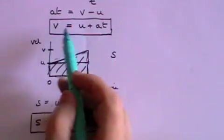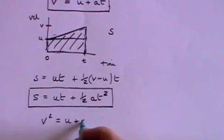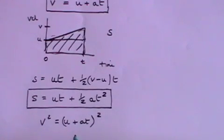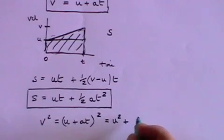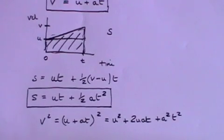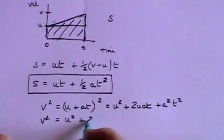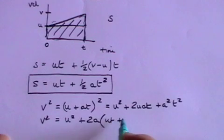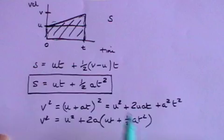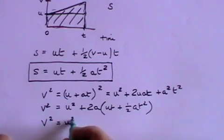Now let's go back and square the first equation. v squared equals (u plus at) all squared, which expands to u squared plus 2uat plus a squared t squared. Rearranging, v squared equals u squared plus 2a times (ut plus half at squared). But ut plus half at squared is s, giving us our third formula: v squared equals u squared plus 2as.